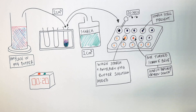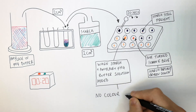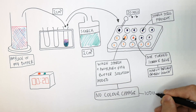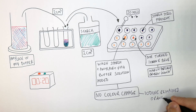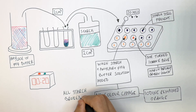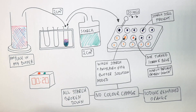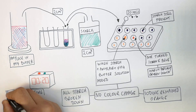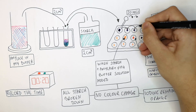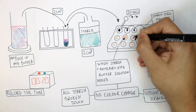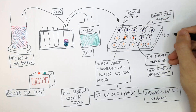When there is no color change and the iodine remains orange, all the starch has been broken down into glucose. Record the time it took for amylase to break down the starch into glucose — each well represents 20 seconds, so in this case that is 160 seconds.